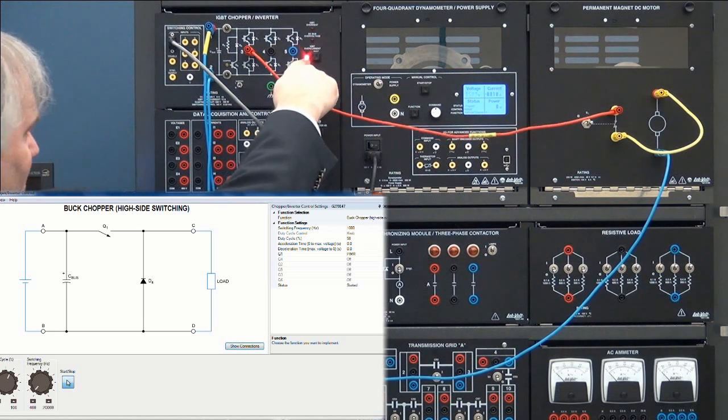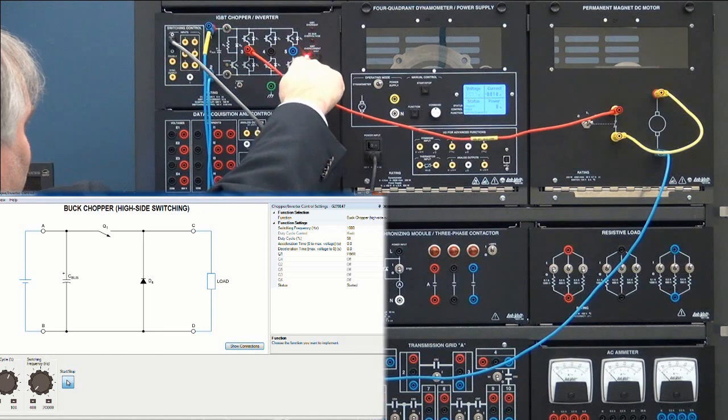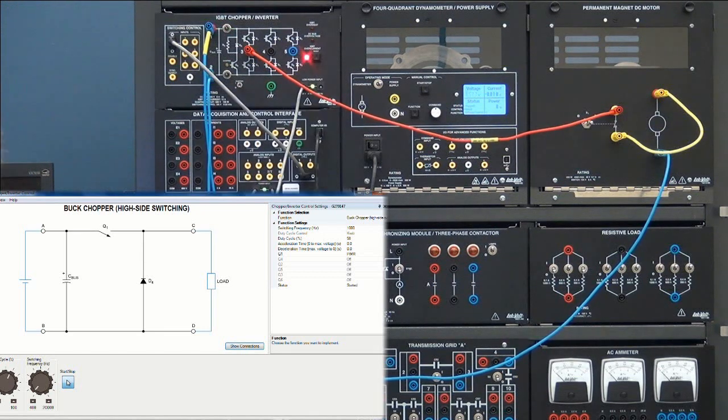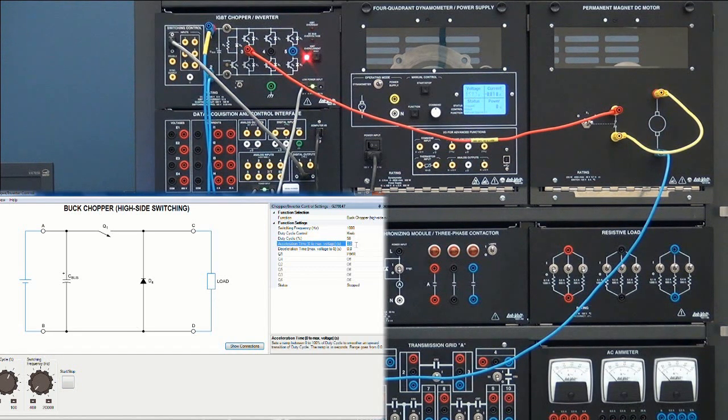The worst that could happen is that you would go into over current if you try to go to a high speed at once. In that case I want to stop here and maybe put some acceleration time to avoid going into over current. Let's say I put five seconds for acceleration and five for deceleration.